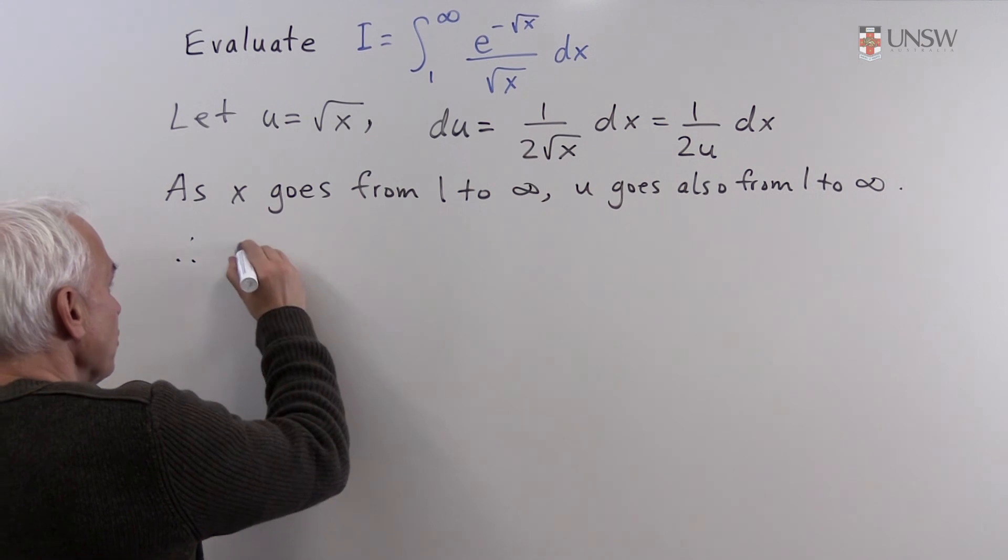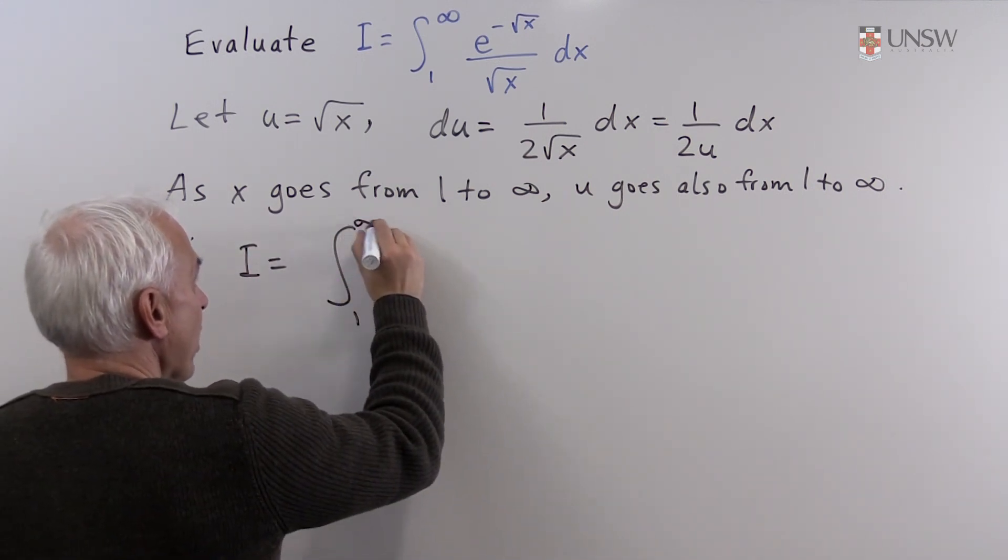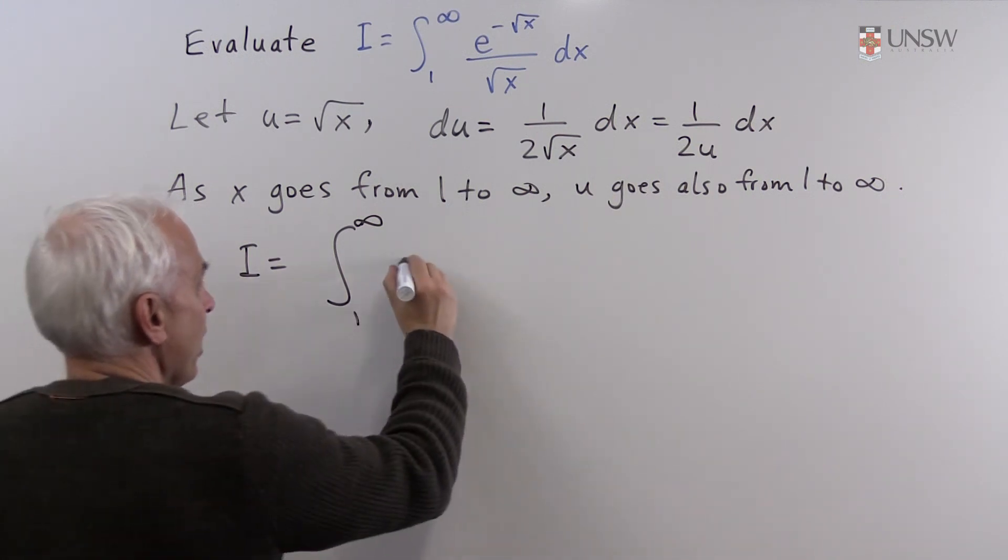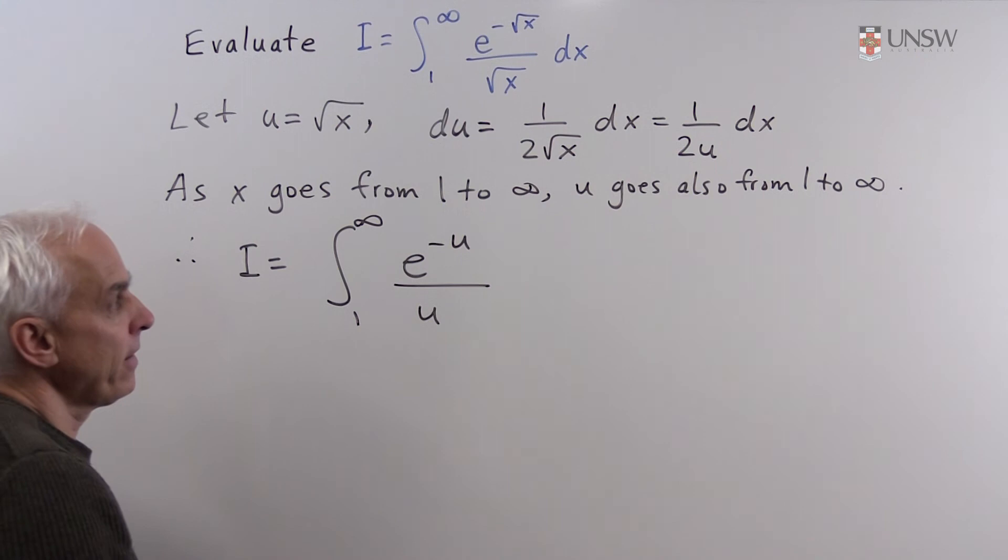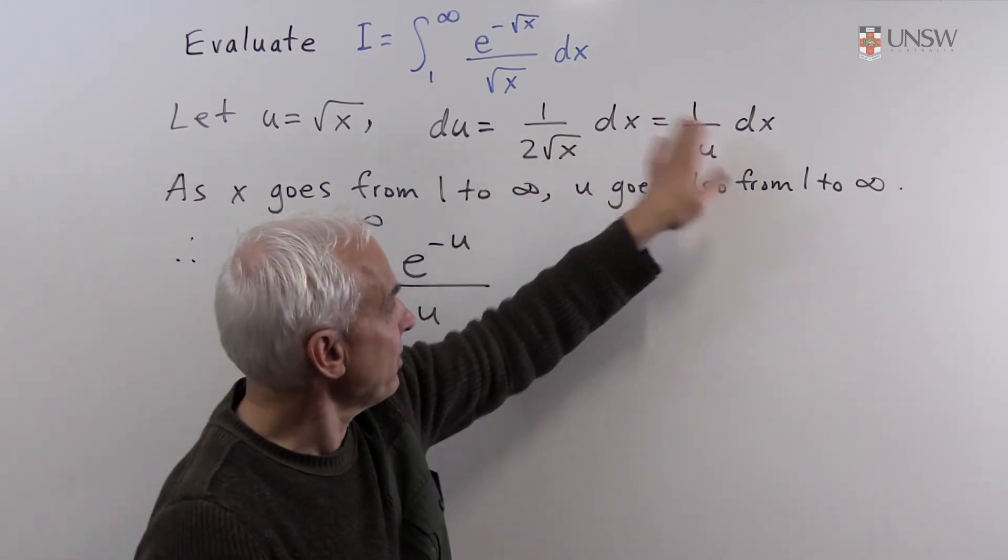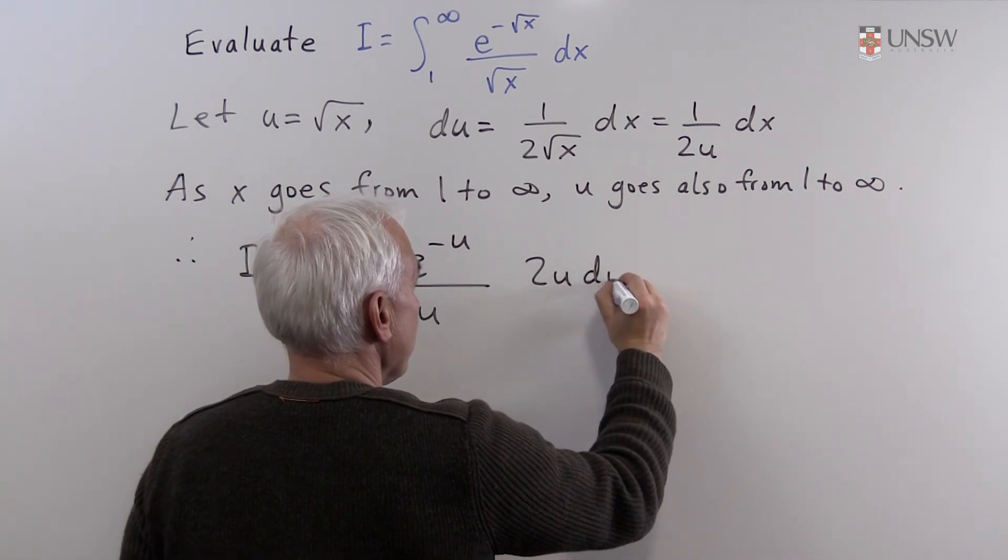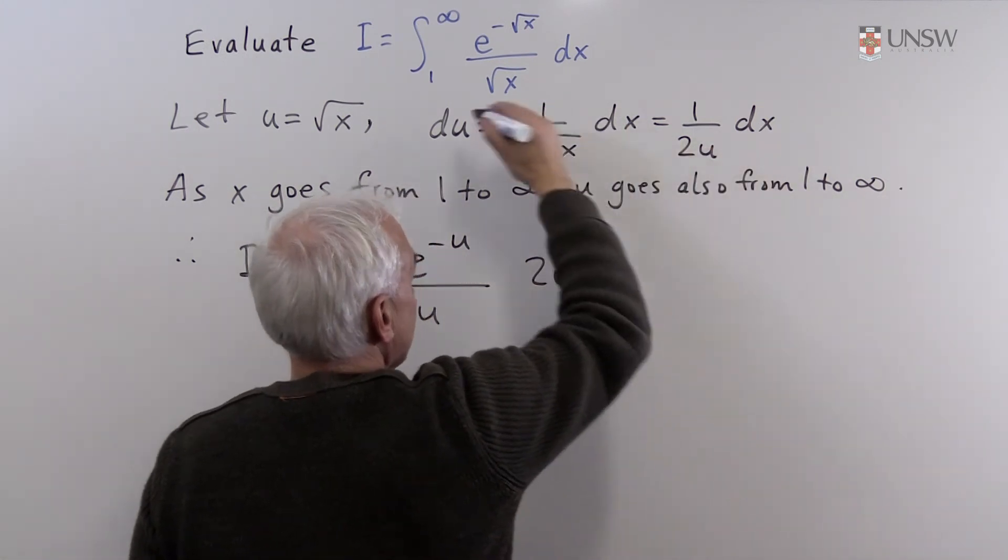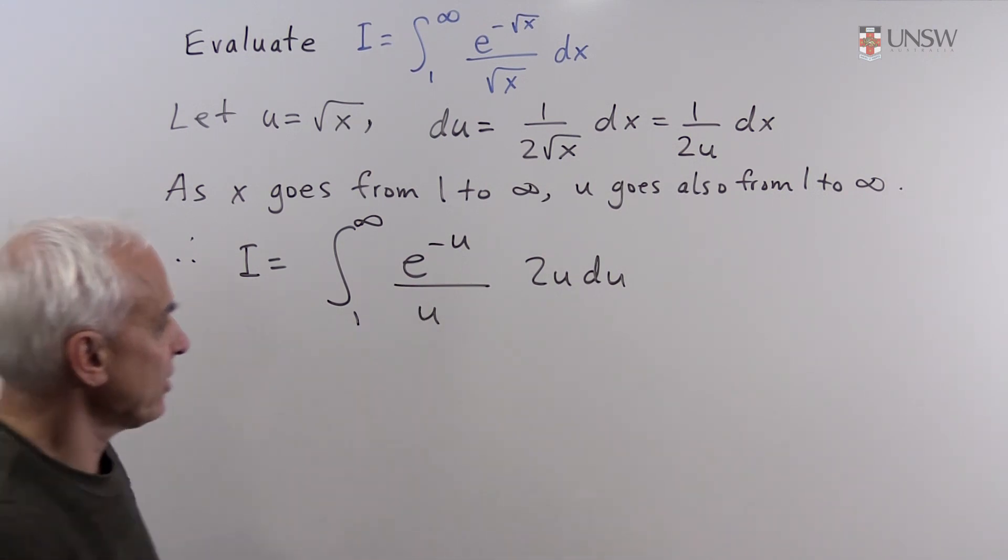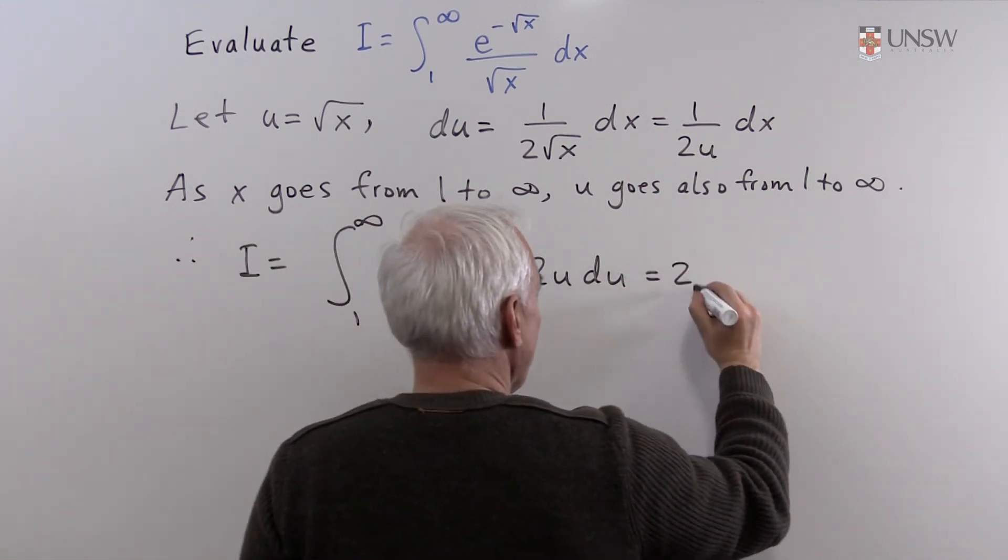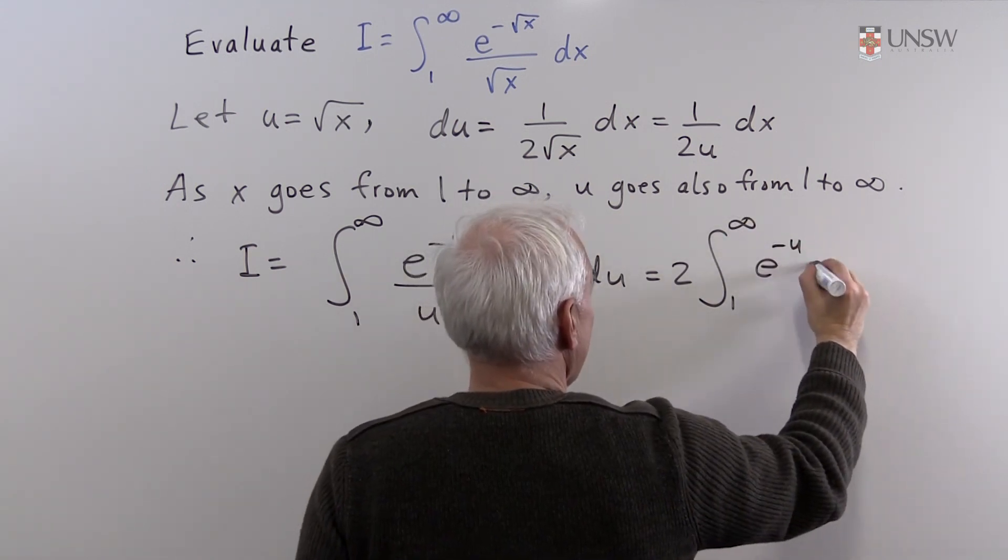Therefore we can now rewrite our integral. It's now an integral as u goes from one to infinity. We'll have an e to the minus u all over u, and the dx is replaced from this expression by 2u du. Solving for dx, 2u du. The u is cancelled conveniently, and we get 2 integral from one to infinity of e to the minus u du.